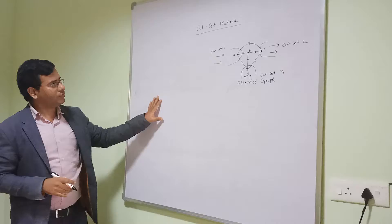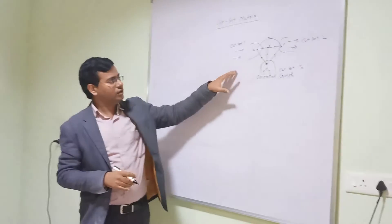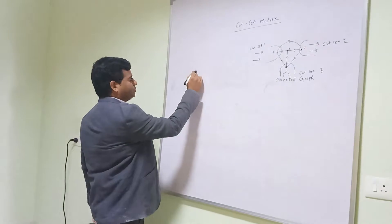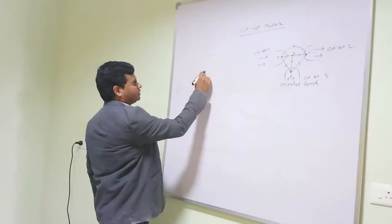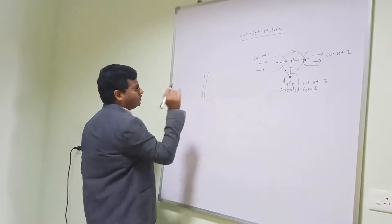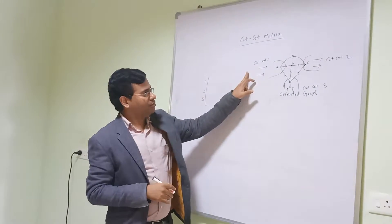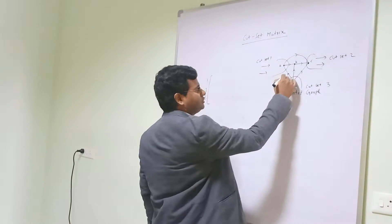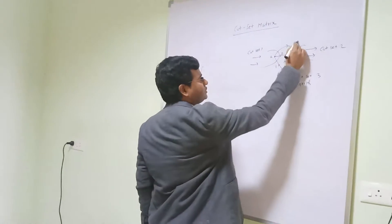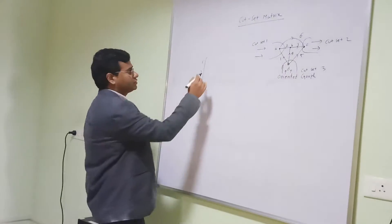After finding the cut sets, we draw the matrix. We have cut set 1, cut set 2, and cut set 3 as rows. In the columns we arrange the number of branches. So how many branches? The branches are 1, 2, 3, 4, 5, and 6. The total number of branches is 6.